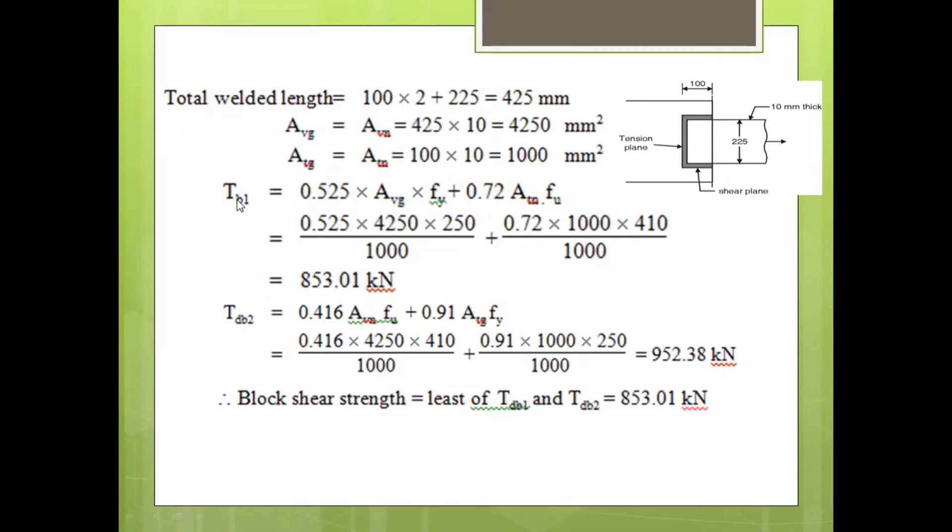This is one equation for evaluating block shear strength. The second equation is TDB2: 0.416 times ABN times FU plus 0.91 times ATG times FY. Substituting all the appropriate values, TDB2 comes to 952.38 kilonewton.